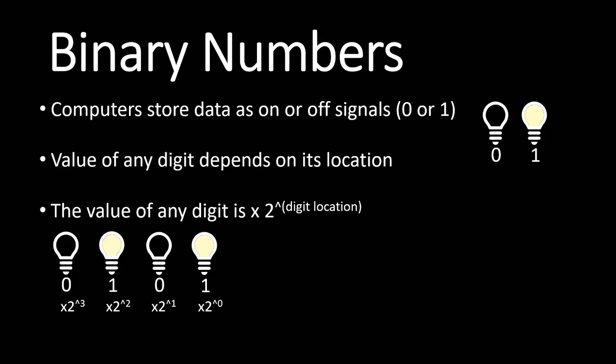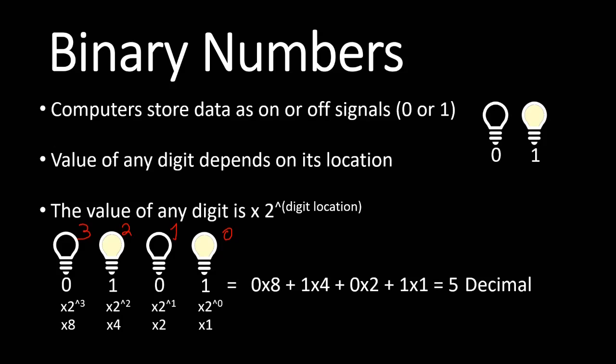If we apply the same formula we used in decimal numbers, the value of any number equals the number times 2 to the power of the digit location. So for example, if we have four bulbs with values off, on, off, on — that is 0, 1, 0, 1 — starting from location 0 on the right, we get: 0×2³ + 1×2² + 0×2¹ + 1×2⁰, which equals 0×8 + 1×4 + 0×2 + 1×1 = 5. So 1010 binary equals 5 decimal.